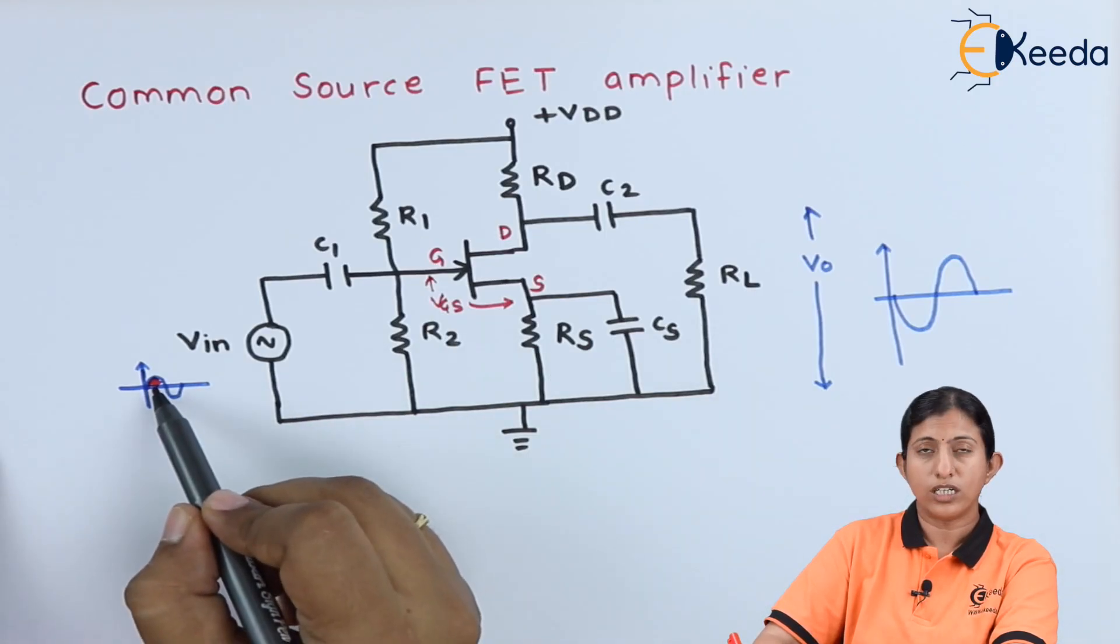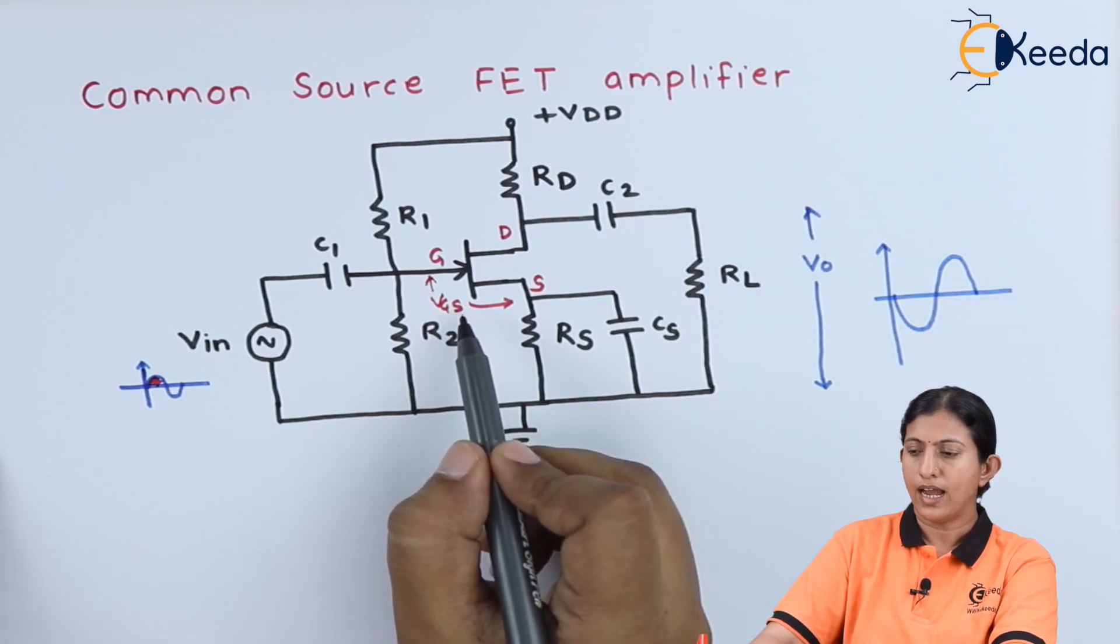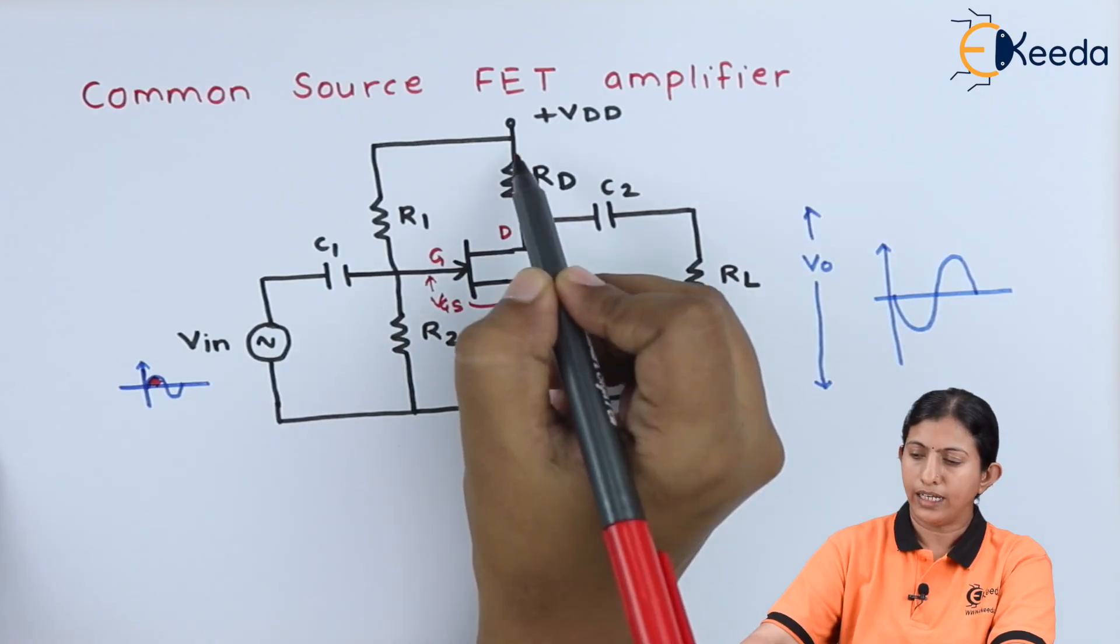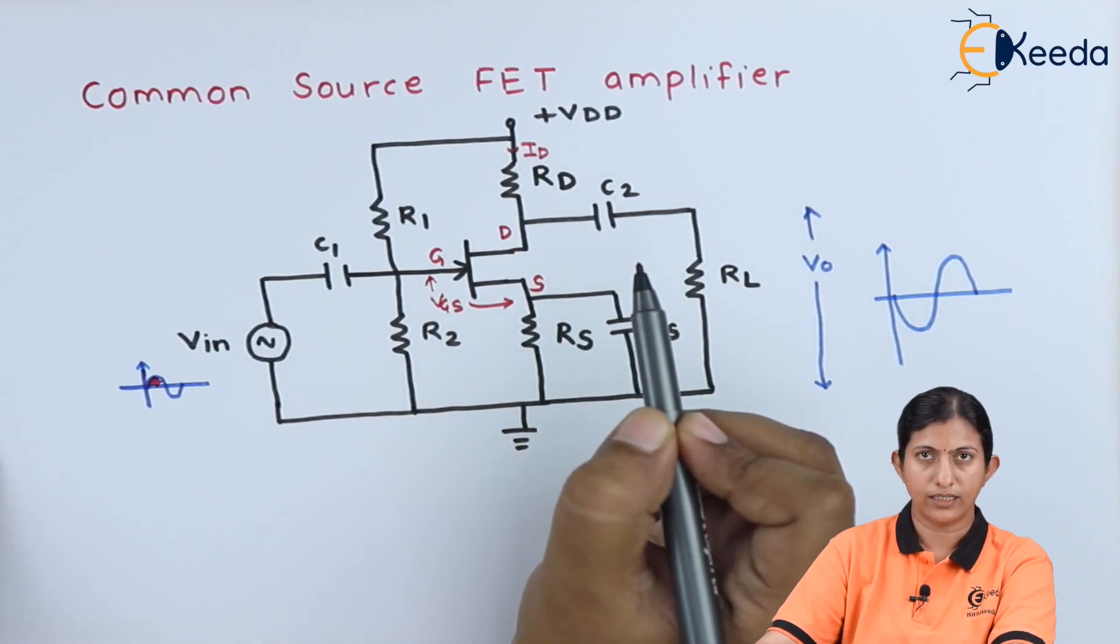During the positive half cycle of the input signal, the net VGS voltage decreases, and because of that, the current ID which is flowing through the resistor Rd increases.